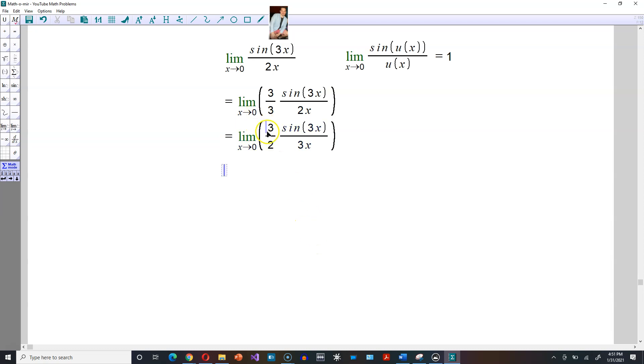Then from here, the 3 halves can be pulled out front because of the rules of limits, so it's going to be 3 halves, and the limit as x approaches 0. What's left within the parentheses would be the sine of 3x divided by 3x, but that is already established to be 1. So you just end up with 3 over 2 times 1, which is just 3 over 2, and that is the answer.